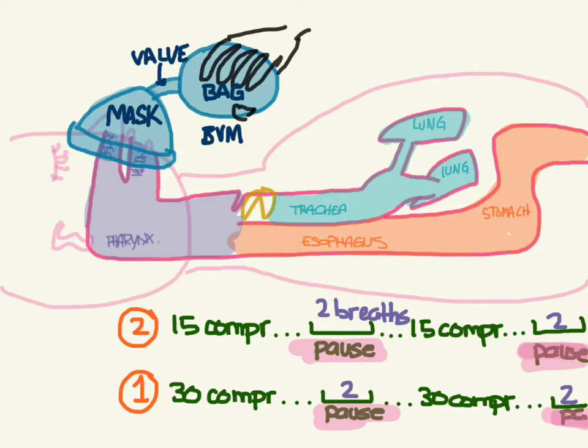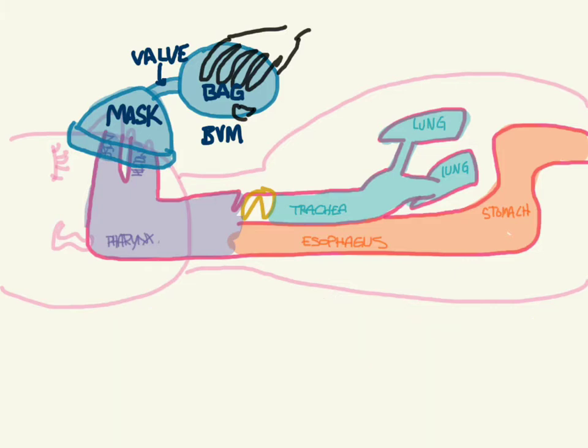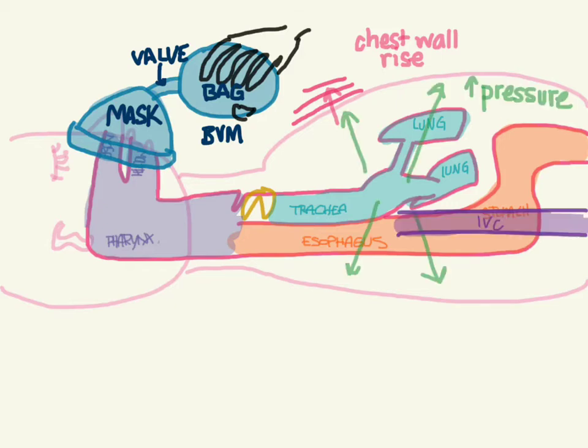The pause is there because if you're doing chest compressions, you're not going to efficiently get the breaths in because you'll be compressing the chest. Give only enough air to see the chest wall rise. Don't give too much because that increases intrathoracic pressure. If this pressure increases too much, it squeezes on the IVC, reducing venous return and preload. It's important not to be overzealous - just look for chest wall rise.